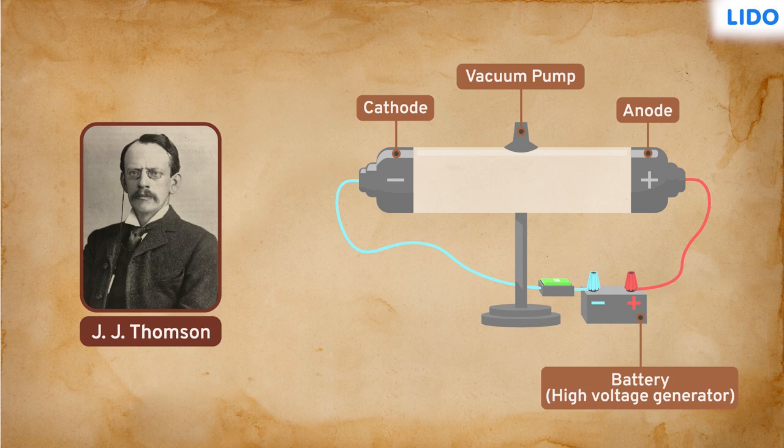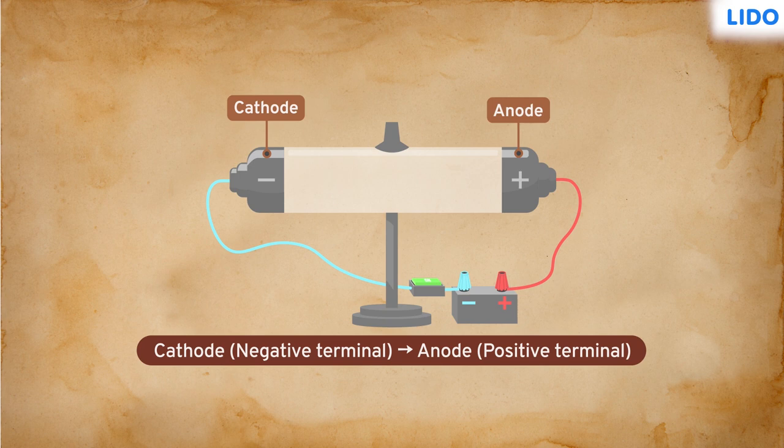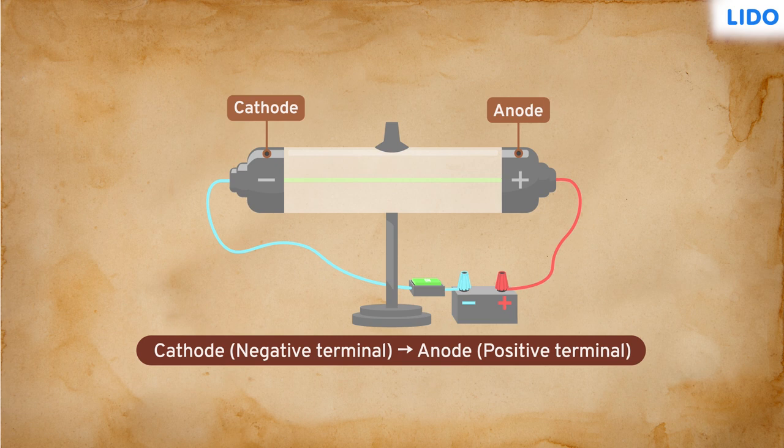When a high voltage was applied between the two electrodes, he observed a greenish-yellow fluorescence. These are cathode rays, which travel from the cathode terminal to the anode terminal. To study the properties of these cathode rays, J.J. Thomson conducted a few different tests.